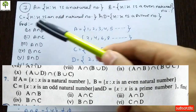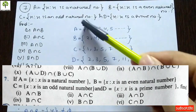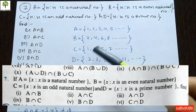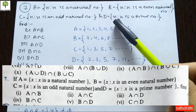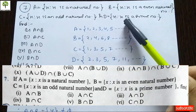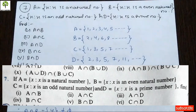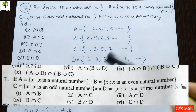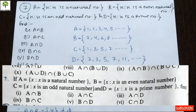Set C is defined as x is an odd natural number, so C contains 1, 3, 5, 7 and so on. And set D is defined as x is a prime number. Prime numbers are those divisible only by themselves or by 1. So those numbers are 2, 3, 5, 7, 11, 13 and so on.